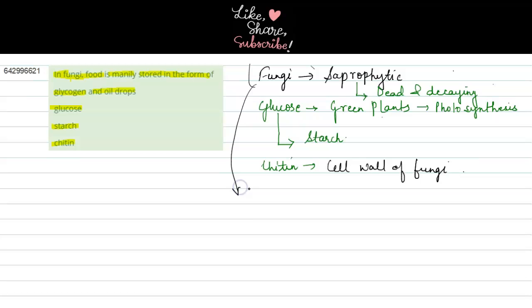This glycogen is also known as animal starch. Since they are not able to produce their own food by photosynthesis, they obtain it from some other organisms, hence they are known as animal starch and that form is known as glycogen.